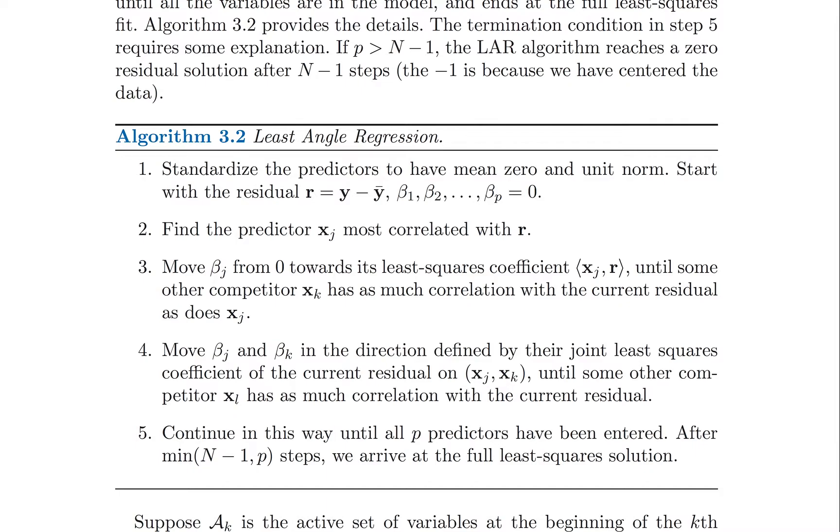So we're going to figure out which predictor xj is most correlated with the residual. Of course, what that really means is you take x transpose r and look for the entry that's largest in absolute value.